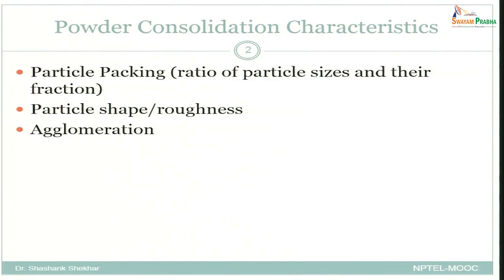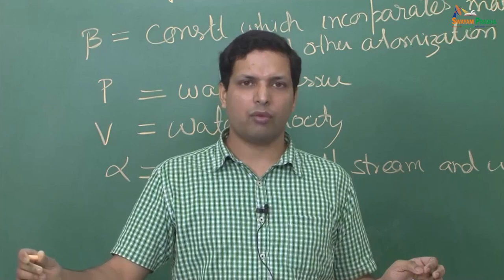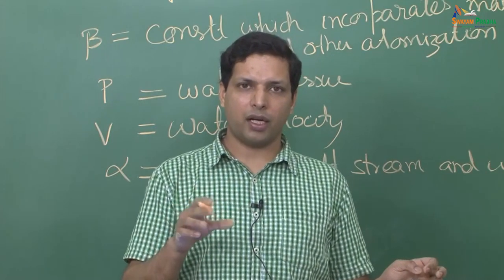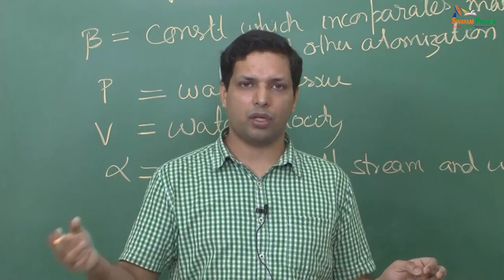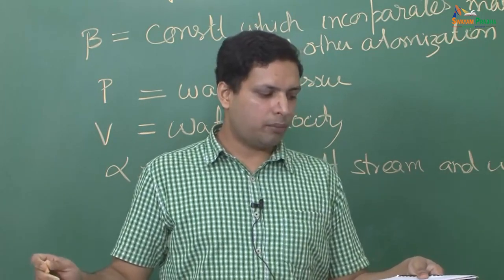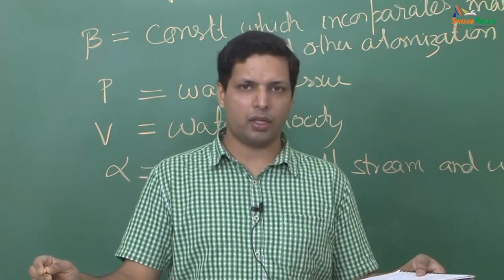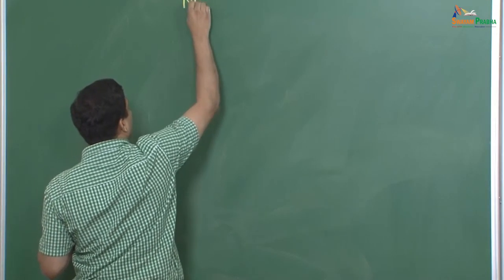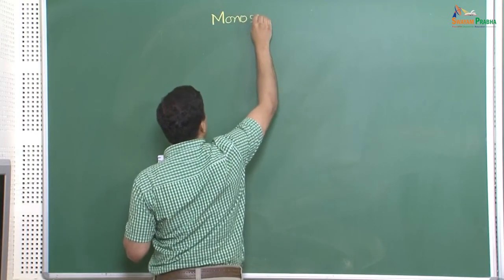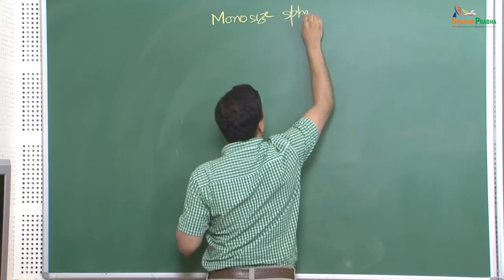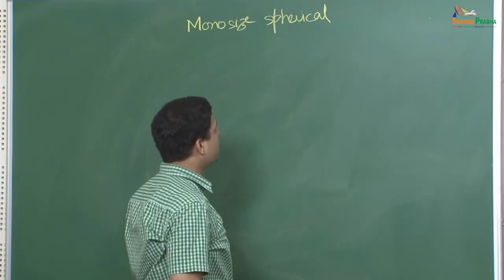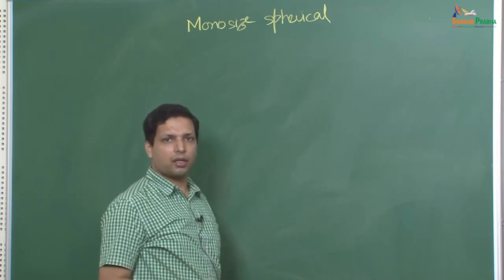The first thing we look at in powder consolidation is particle packing. We can borrow our understanding from crystal structures — FCC, BCC, etc. — and use them as models for how powder particles pack, to find the packing fraction which equals the relative density. We will consider mono-size spherical particles as an idealized scenario.